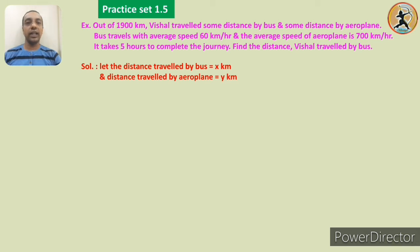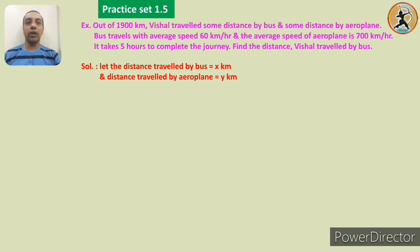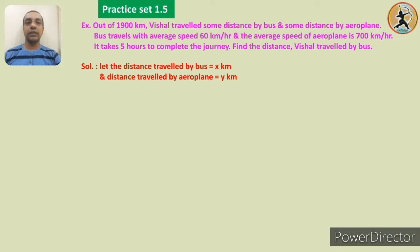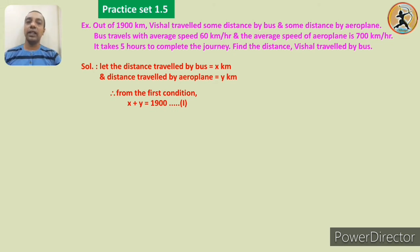Now we consider the first condition: out of 1900 kilometres, some distance is by bus and some by aeroplane. So the first equation is x plus y equals 1900.